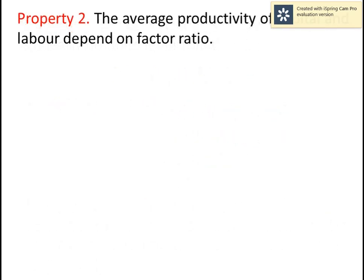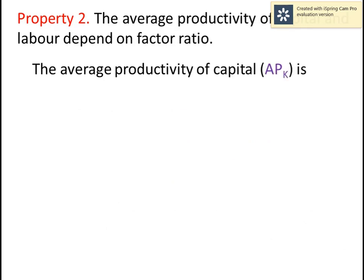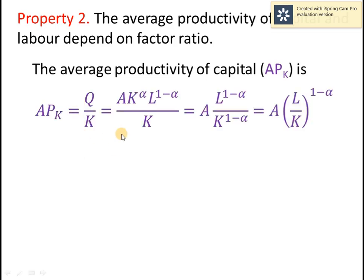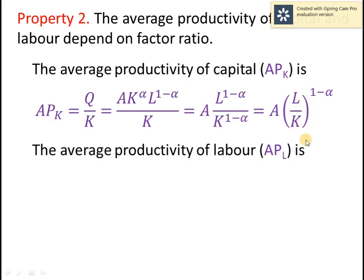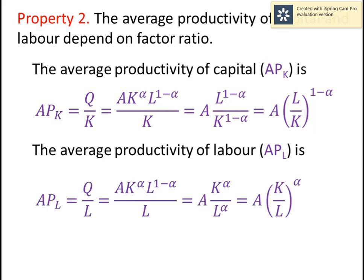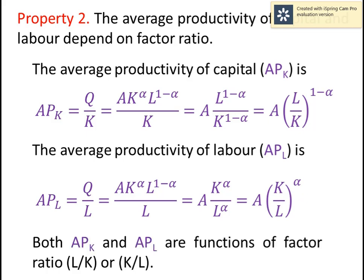Property 2: the average productivity of capital and labor depends on the factor ratio. The average productivity of capital, APK, is q/k = a*k^alpha * l^(1 - alpha) / k. After simplifying, we get a*(l/k)^(1 - alpha). The average productivity of labor is a*(k/l)^alpha. So both APK and APL are functions of the factor ratio l/k or k/l.